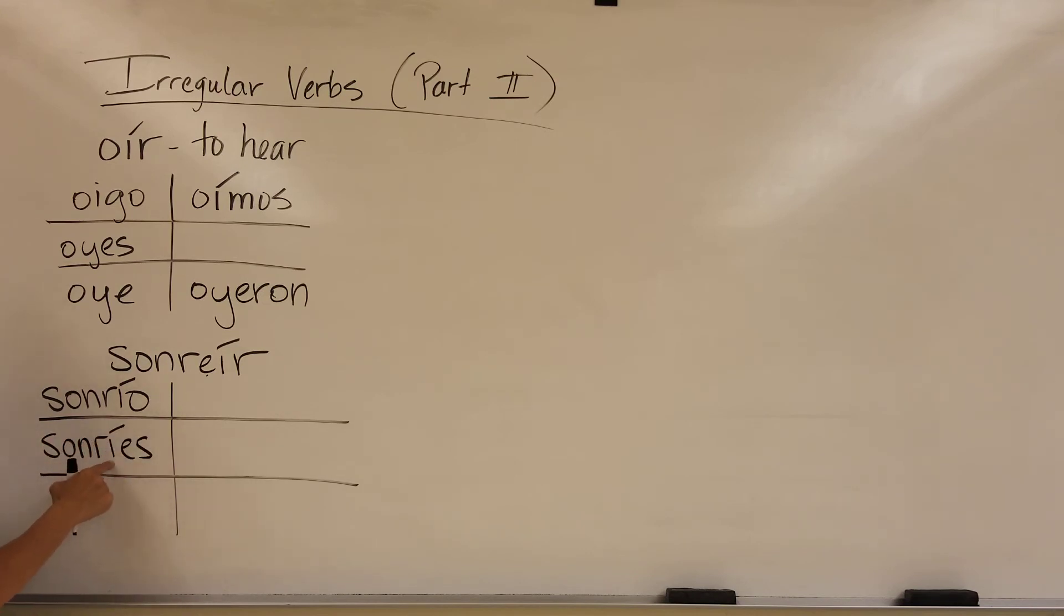Sonríes, so it changes from an e to an i with an accent, then we have the ending for an ir verb. Sonríe.